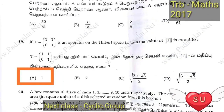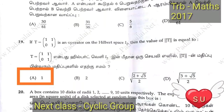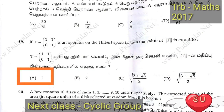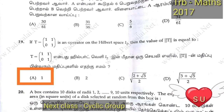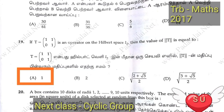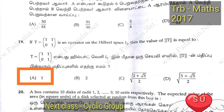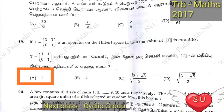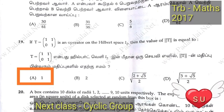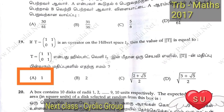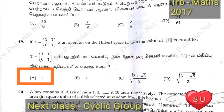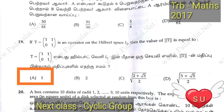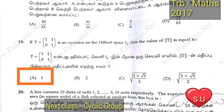Next question on Hilbert space: it is one of the matrix problems. If T equal to the matrix [1,0;0,1] is the operator on a Hilbert space H, then the value of the norm of T is equal to — okay, so it is one of the answers: one.